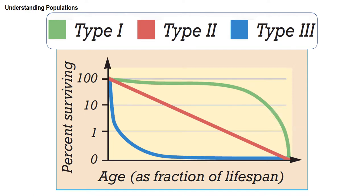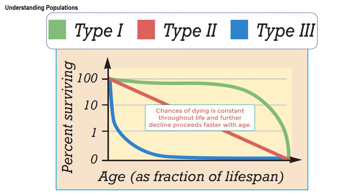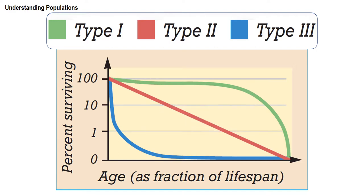For type 2 organisms, the probability of dying is constant at any age — fish, for example, can die at any age through predation, pollution, or disease. Type 3 is characteristic of broadcast spawners like clams and most invertebrates. They produce offspring of which the majority dies at a very young age — that is why when culturing invertebrates you get very low survival rates at early stages, and only very few survive to complete their lifespans.